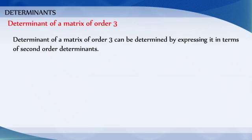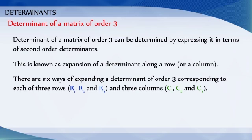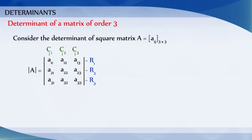Determinant of a matrix of order 3 can be determined by expressing it in terms of second order determinants. This is known as expansion of a determinant along a row or a column. There are six ways of expanding a determinant of order 3, corresponding to each of the 3 rows and 3 columns. Consider the determinant of a square matrix A equal to [aij] of order 3×3, that is det A equal to the determinant of [a11, a12, a13; a21, a22, a23; a31, a32, a33].